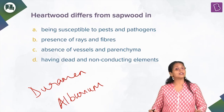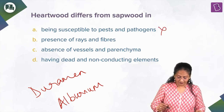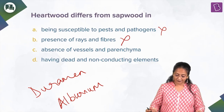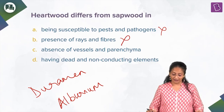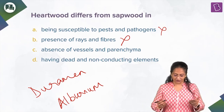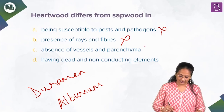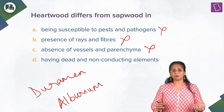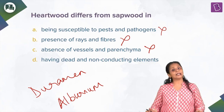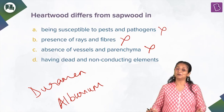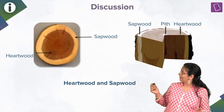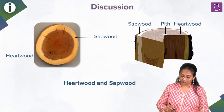Heartwood differs from sapwood in being: susceptible to pests and pathogens — no, it is highly resistant, this is wrong; presence of rays and fibers — no, you do not find rays and fibers in heartwood; absence of vessels and parenchyma — again, you do find vessels but they are non-conducting, and parenchyma is present but dead; having dead and non-conducting elements — yes. Due to deposition of various substances, the elements are dead and non-conducting.